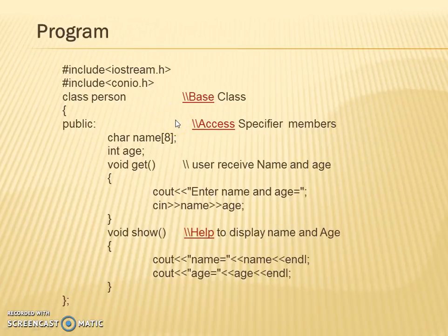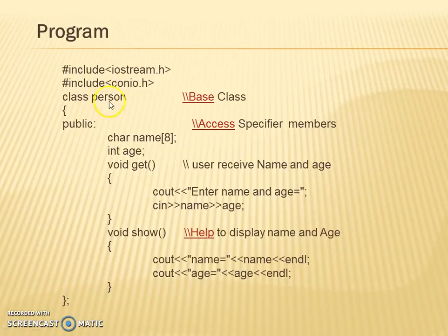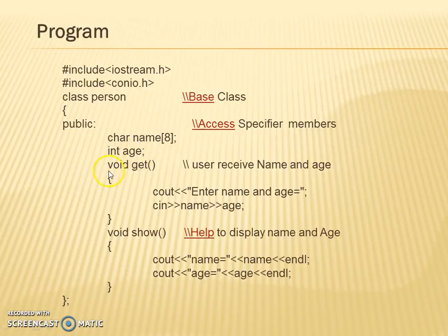Here is an example program for understanding how multi-level inheritance can be done. We are working on one example where person is a base class. We define data members under a public access specifier. We declared a character variable name and age. We declare a void get function which helps us to receive the name and age of the person. Accordingly, we declared one more member function void show, which will help us to display the name and age.